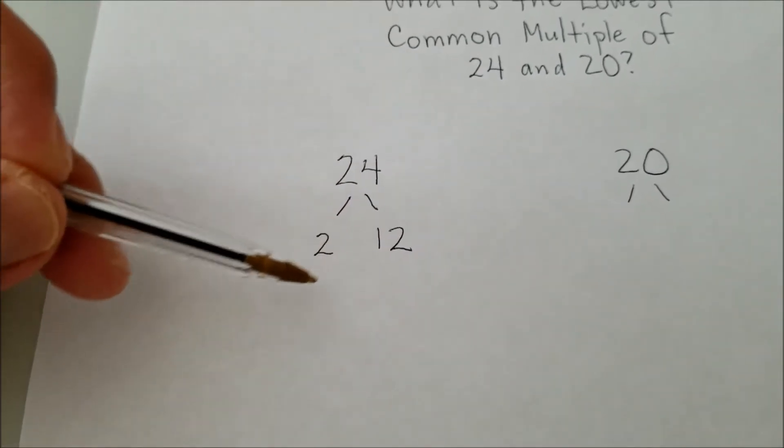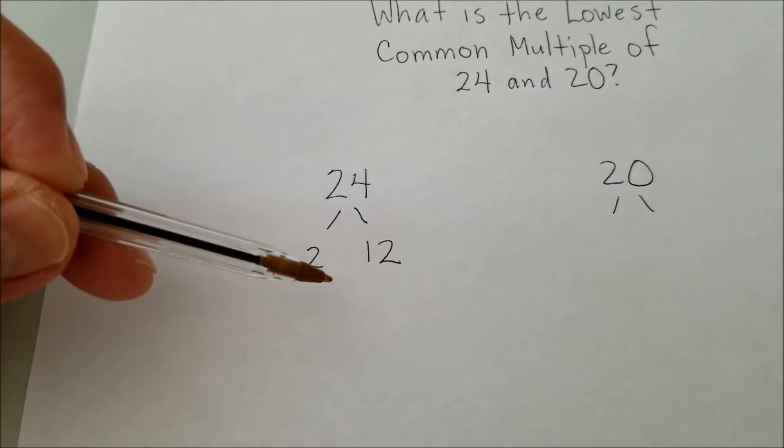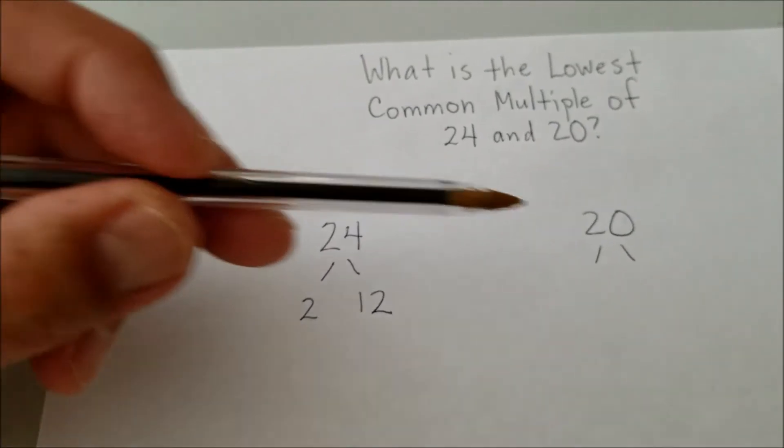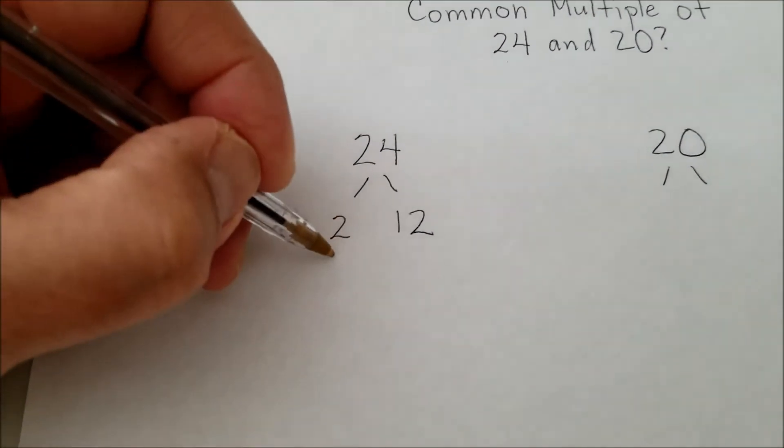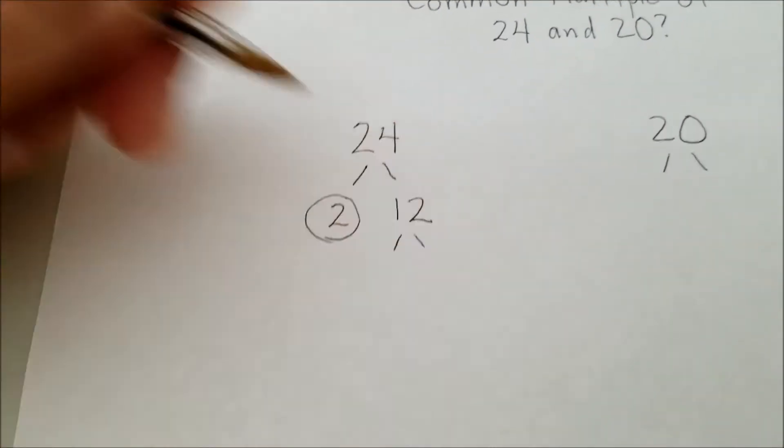And what I'm basically going to do is circle all the prime numbers, and then I'll show you how, when we get our answer, how it's going to give us this lowest common multiple. So 2 is prime, so I'm going to circle that. And then let's factor out the 12.